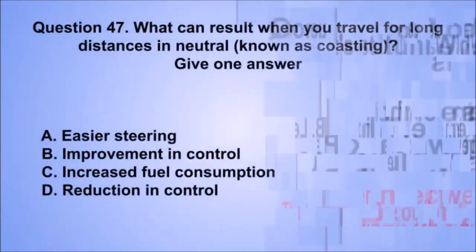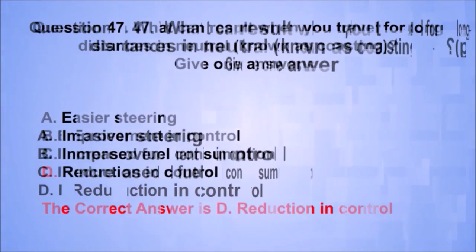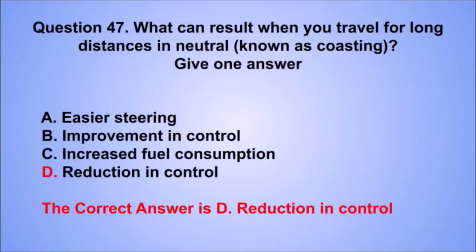Question 47. What can result when you travel for long distances in neutral, known as coasting? The correct answer is D: Reduction in control.